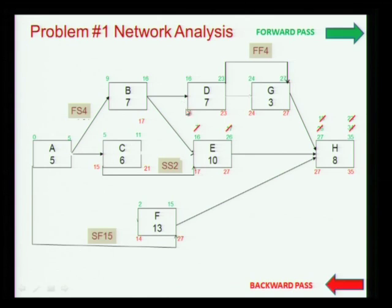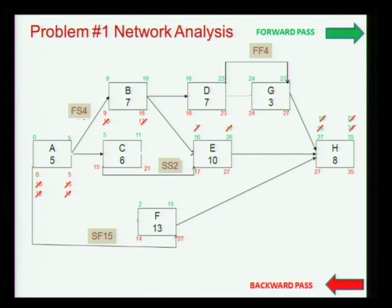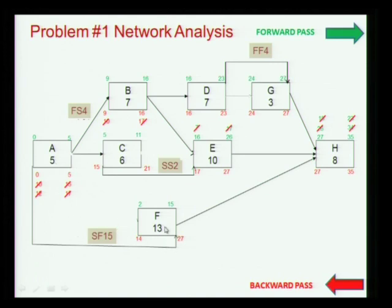Here we have two options: we had 16 and 17, so we take the minimum — 16 and 10 or 17 and 9, giving 16 and 10. Coming down to three paths, we have 0, 0, and 5, so it is 0 and 5. What this means is that 15 days after A starts, only F can finish. This is just a logical relationship — this is not a common situation; we are only doing it for the logic in the network.